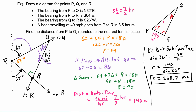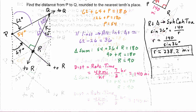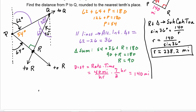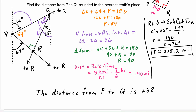Since this was a word problem, we state our answer in a sentence: the distance from P to Q is approximately 238.2 miles.